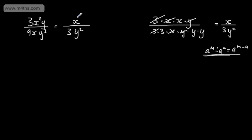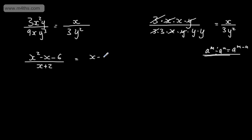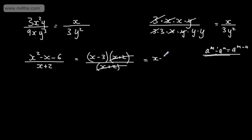So simplified, we have x over 3y squared. Let's now look at simplifying another fraction: x squared minus x minus 6 divided by x plus 2. In the numerator we have a quadratic expression. We can factor this to (x minus 3)(x plus 2), and in the denominator we have x plus 2. We cancel the x plus 2's, leaving x minus 3 over 1, or simply x minus 3. All we've done is factored the quadratic and cancelled off.